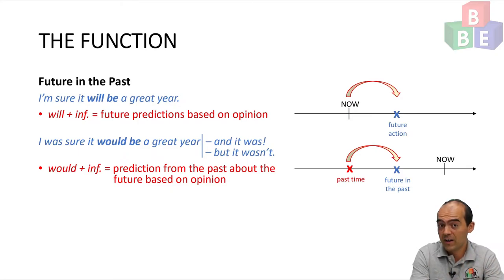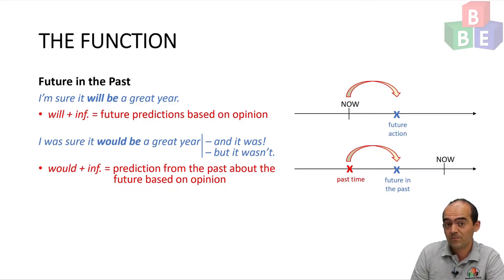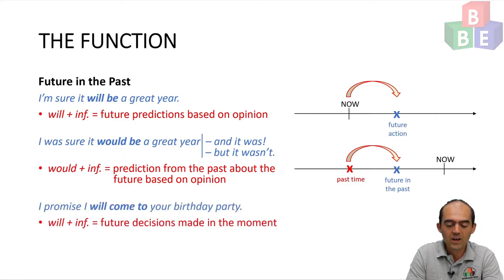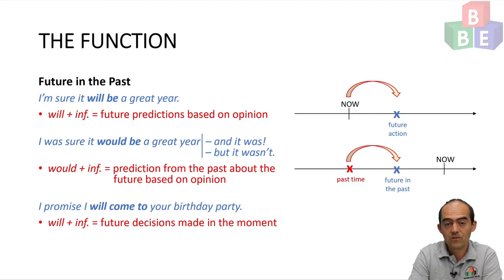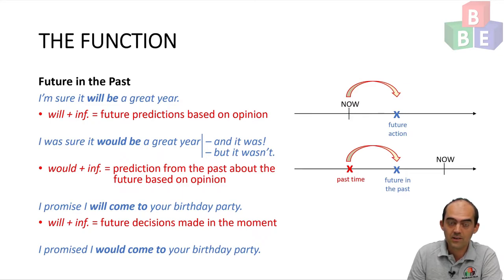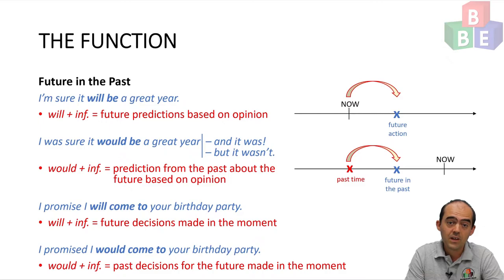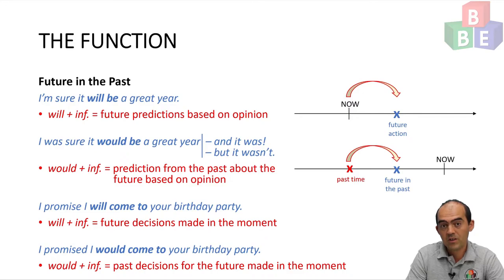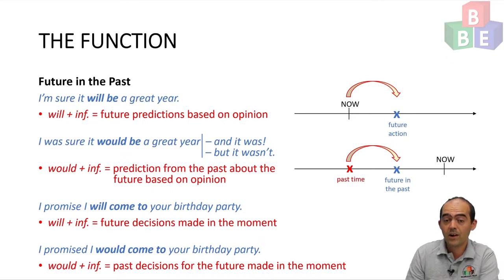The year has already happened. The prediction was in the past and so was the future action. The second sentence was 'I promise I will come to your birthday party.' For future in the past, I could say 'I promised I would come to your birthday party' — again using would plus infinitive, this time for a past decision for the future made in the moment. This past decision affected a future moment which is now in my past.